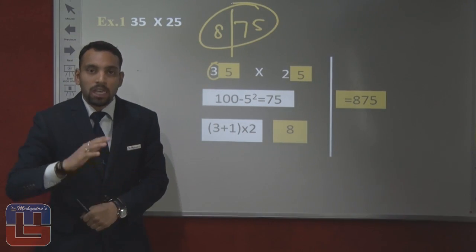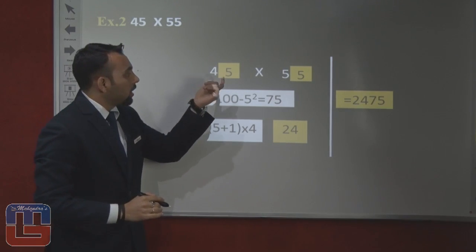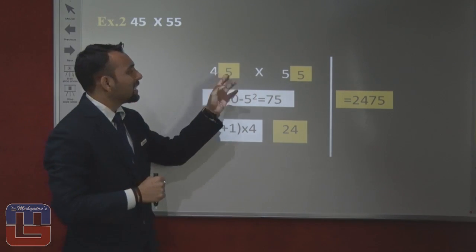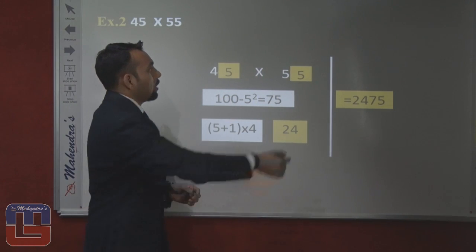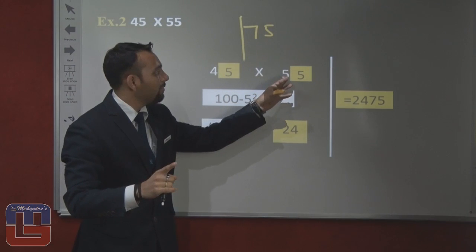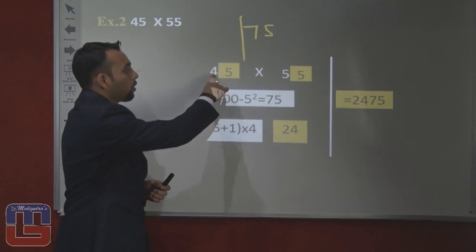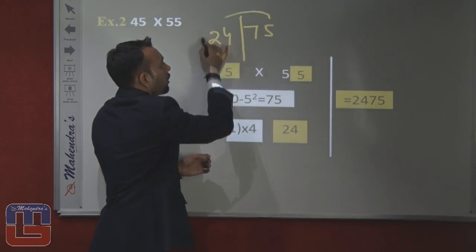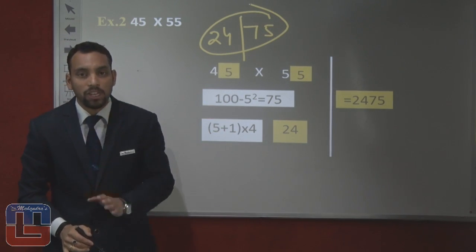By using this approach, we can multiply without using pen and paper. Next example based on the same rule: 45 into 55. The last digit is 5 and the difference between the two numbers is 10, so the rule applies. 75 will always come. Between 5 and 4, 5 is bigger. Add 1 to 5 to get 6, then multiply 6 by 4 to get 24. So the answer will be 2475.